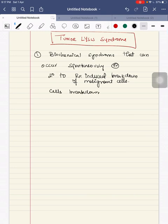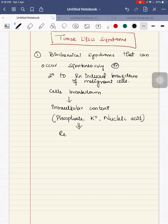When the malignant cells break down, all the intracellular content comes out into the circulation. The intracellular content includes phosphate, potassium and nucleic acid. These are released into the circulation.